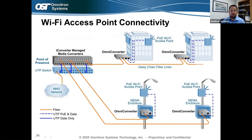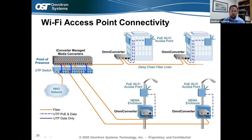For Wi-Fi access point connectivity, here's an application showing iConverter media converters doing copper-to-fiber conversion in a central office and running fiber to various buildings in a smart city network — public libraries, police departments, fire departments. You can daisy chain from one building to the next with fiber, convert to PoE to power Wi-Fi access points, or use a single-fiber single-copper-port unit for point-to-point fiber dropping off PoE to one device. Omni Converters are very small and compact, fitting in the palm of your hand, and can be temperature-hardened for outdoor deployments.